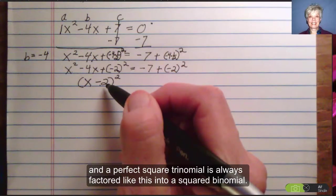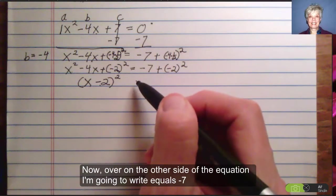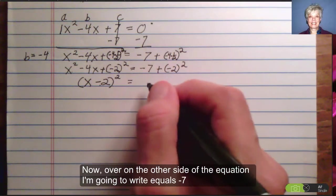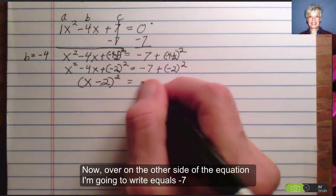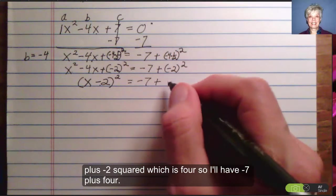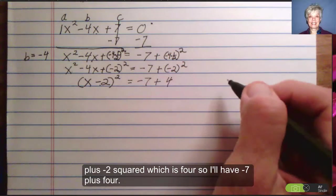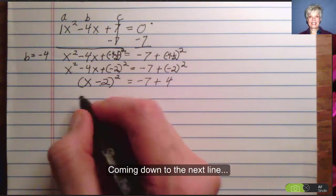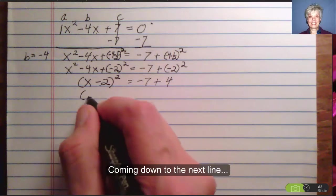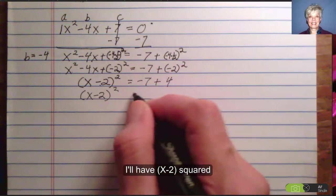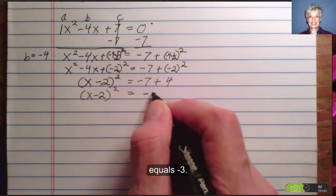Now over on the other side of the equation I'm going to write equals negative 7 plus negative 2 squared is 4, so I'll have negative 7 plus 4. Coming down to the next line, I'll have x minus 2 squared equals negative 3.